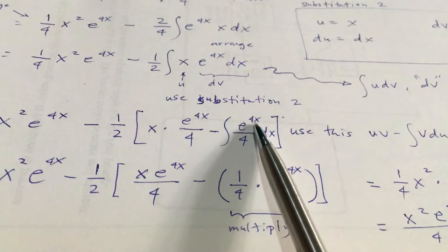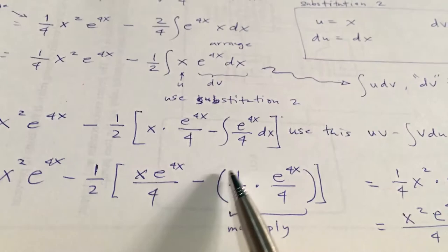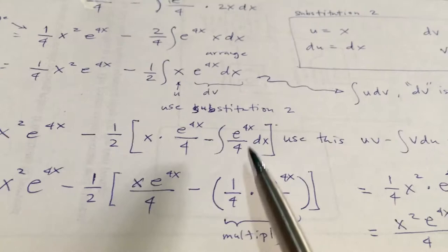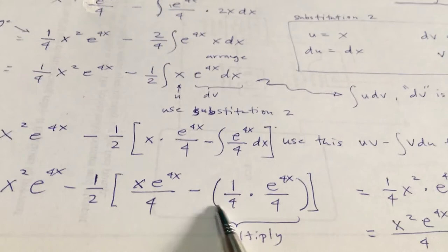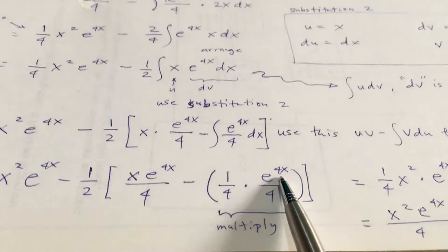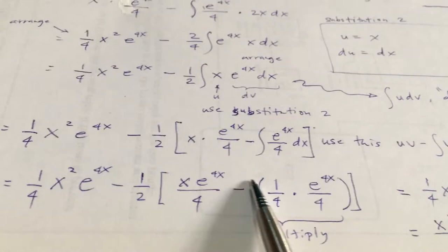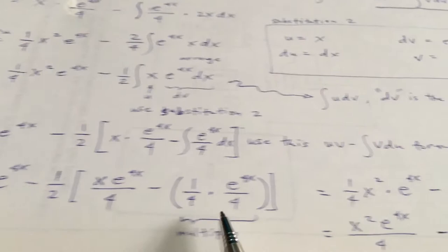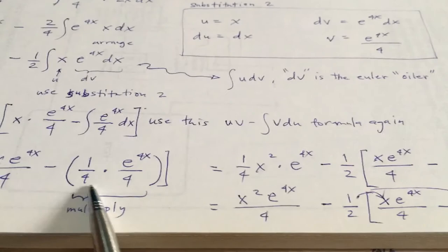Integrating e raised to the 4x over 4 — make a parenthesis so we won't be confused when distributing. There will be a 4 in the denominator because of the differentiation of 4x. You will place it at the denominator, giving 2 e raised to the 4x over 4. Copy this, bring this down, then multiply and distribute.